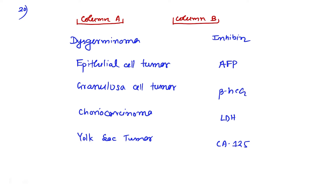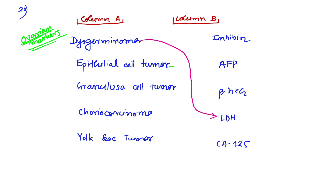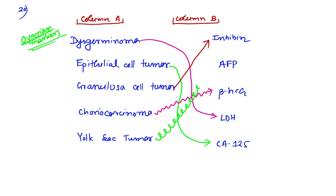Question number 20 was a column-matching question about ovarian tumor markers. For dysgerminoma, the marker is LDH. For epithelial cell tumor carcinoma, it is CA-125 (cancer antigen 125). For granulosa cell tumor, it is inhibin. For choriocarcinoma, it is beta-HCG. For yolk sac tumor, it is AFP (alpha-fetoprotein).